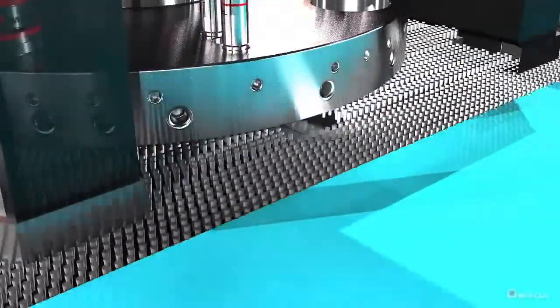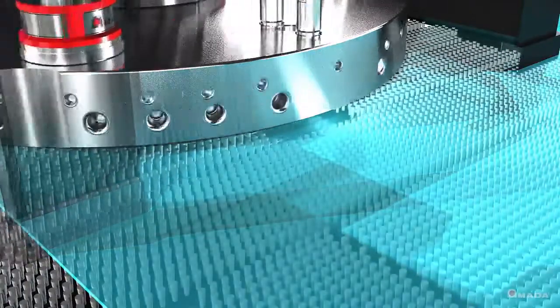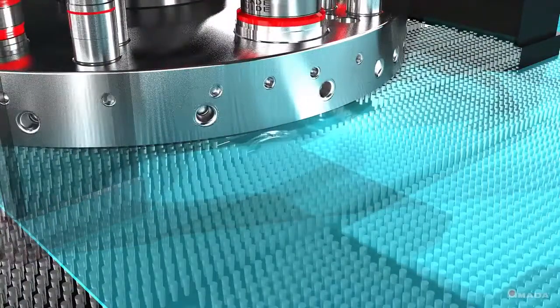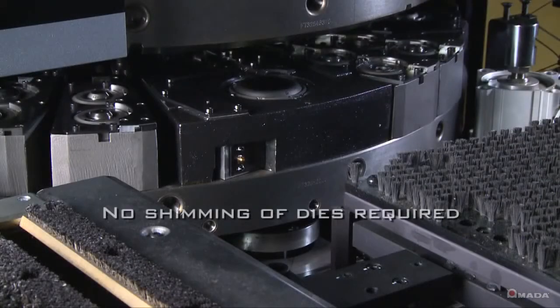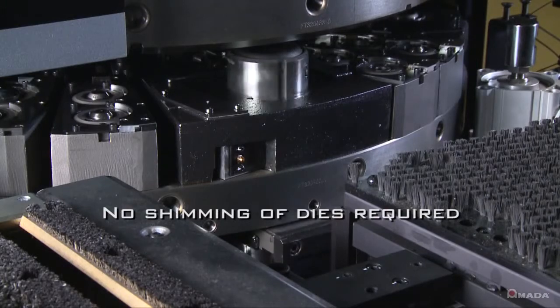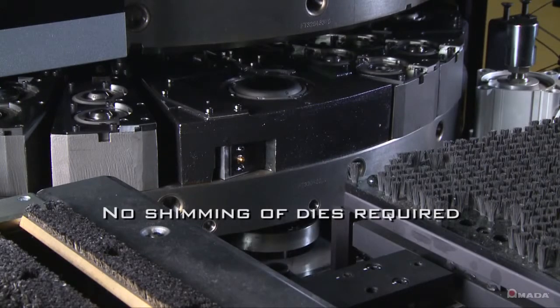As a sheet is being processed and the turret rotates to use a different tool, its corresponding die will rise through a window on the brush table. This allows for a uniform pass line, which is key, especially since forming dies usually sit higher than other dies and can scratch the bottom of the sheet.